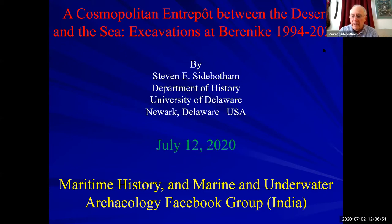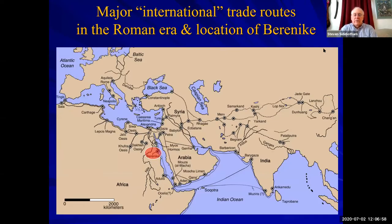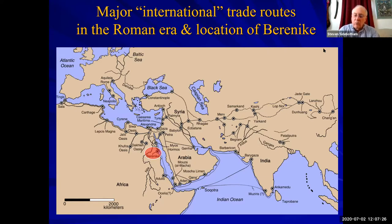It's about our excavations at Berenike on the Red Sea coast of Egypt. The project started in 1994, and for those of you unfamiliar with the site, this map shows those portions of the old world and the various major trade routes linking these vast areas of Europe, Africa, and Asia together. We're going to concentrate only on the site of Berenike, which was one of many points along this vast network that joined three continents, basically linking the northwestern Indian Ocean via the Red Sea to the Mediterranean.